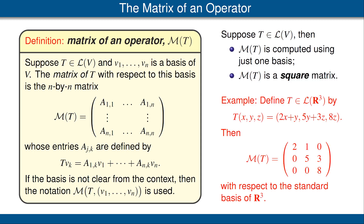Let's look at an example. Define T to be the operator on R3 given by the equation shown here. We'll think of the standard basis for R3. Then the matrix of T is the matrix shown here. The reason for that is that T of (1, 0, 0) is equal to (2, 0, 0), giving us our first column. For our second basis vector, T of (0, 1, 0) equals the vector (1, 5, 0), giving us the second column. Our third basis vector is (0, 0, 1), and T of that vector is (0, 3, 8), giving us the third column shown here.